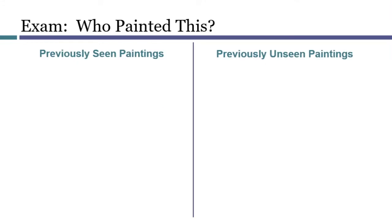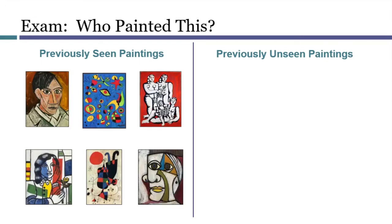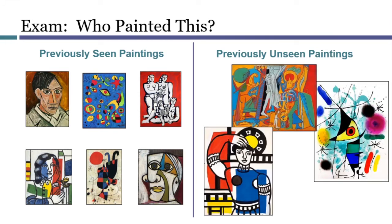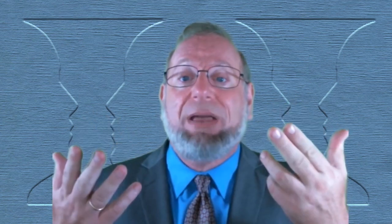Then came the tests. The interleaved group performed much better — they did better at remembering who painted the pictures they had already seen, and they were also better at judging the artist of works they had not seen before. So somehow interleaving helped them better understand both what each painter was about and the differences between them. Many experiments of this kind show that interleaving produces better learning. In the early stages, interleaving might feel harder — you feel like you're switching gears, frequently looping back, retrieving items from memory, and working with them again. But all the studies show this leads to better comprehension, better long-term memory, and better test performance. So I think you'll see that this also works when applied to constitutional law.